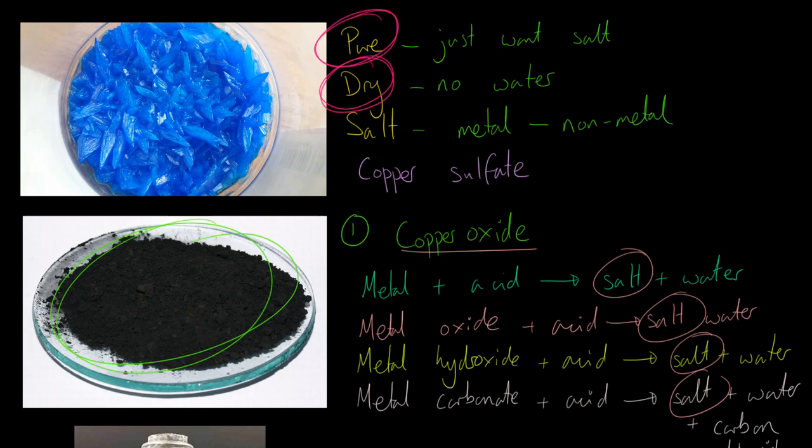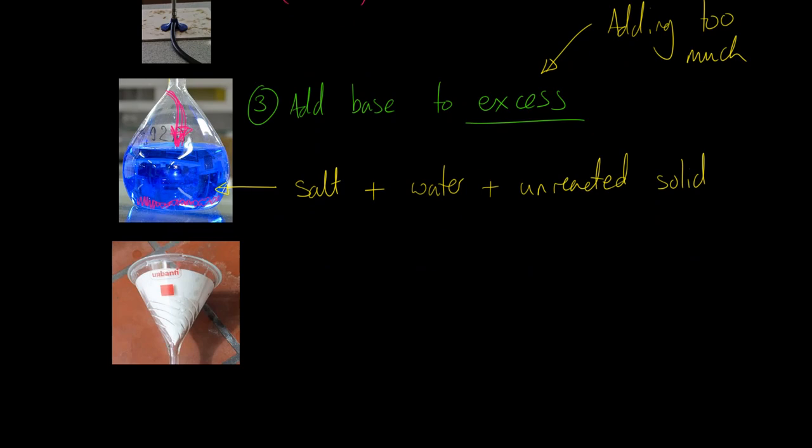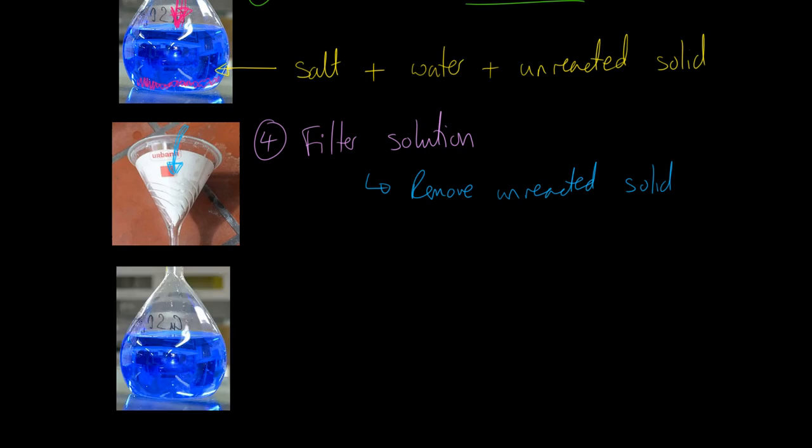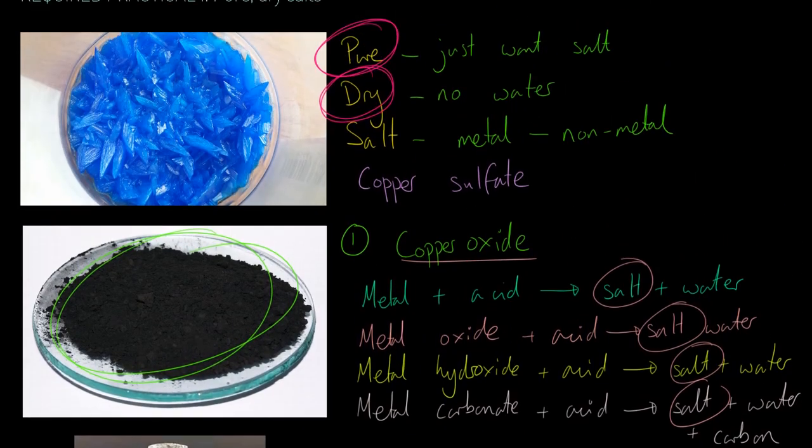So we have two things that we need to deal with: we need to improve the purity by getting rid of the unreacted solid, and then we need to dry this all out. How are we going to do that? We are going to filter the solution. We are going to pour it into our funnel with filter paper, and this will remove the unreacted solid. That means that what we will be left with after we've filtered it is our solution, and this will contain copper sulfate and water. Of our objectives - pure, dry, salt - we have achieved purity. Well done. And it's also a salt. Well done. But now we need to dry it all out.